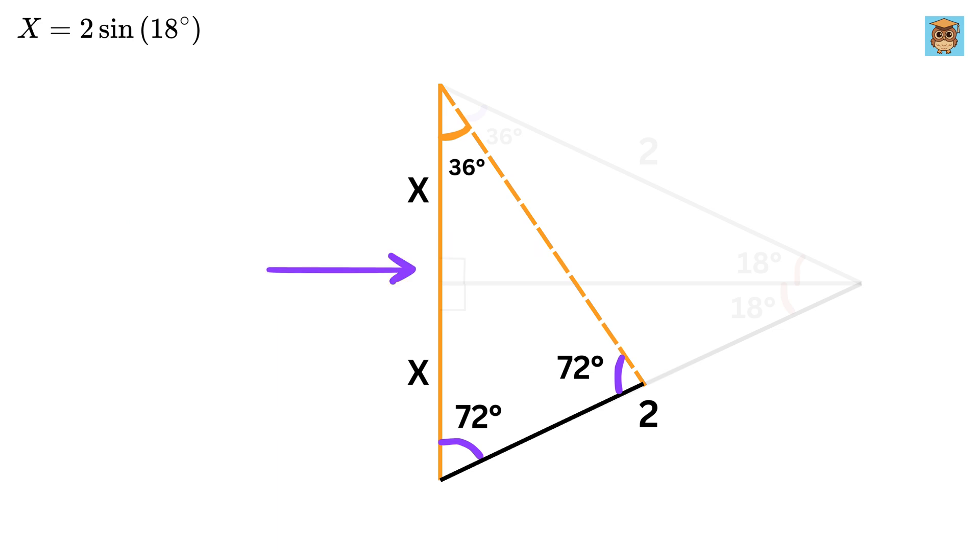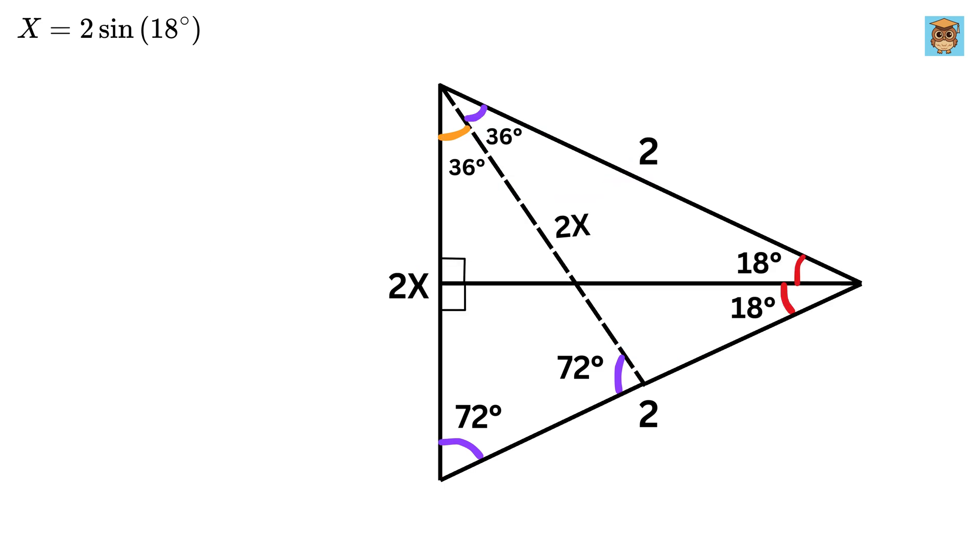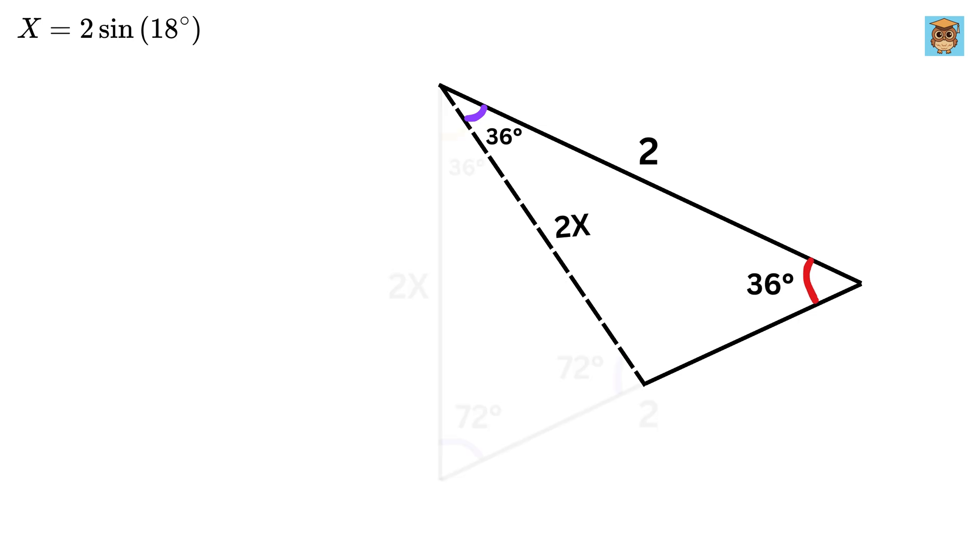And since this side is equal to 2x, therefore this side length will also be equal to 2x. Nice! This angle is 18 plus 18, or 36 degrees. Now consider this triangle.